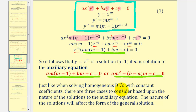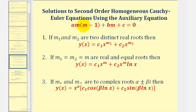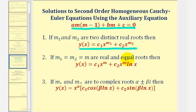Just like solving homogeneous differential equations with constant coefficients, there are three cases based on the nature of the solutions to the auxiliary equation. First, if m sub one and m sub two are two distinct real roots, the general solution takes this form. Second, if m sub one equals m sub two — two real equal roots — the general solution has an extra factor of natural log x in the second term. Third, if m sub one and m sub two are complex roots of the form alpha plus or minus beta i, the general solution takes on yet another distinct form.